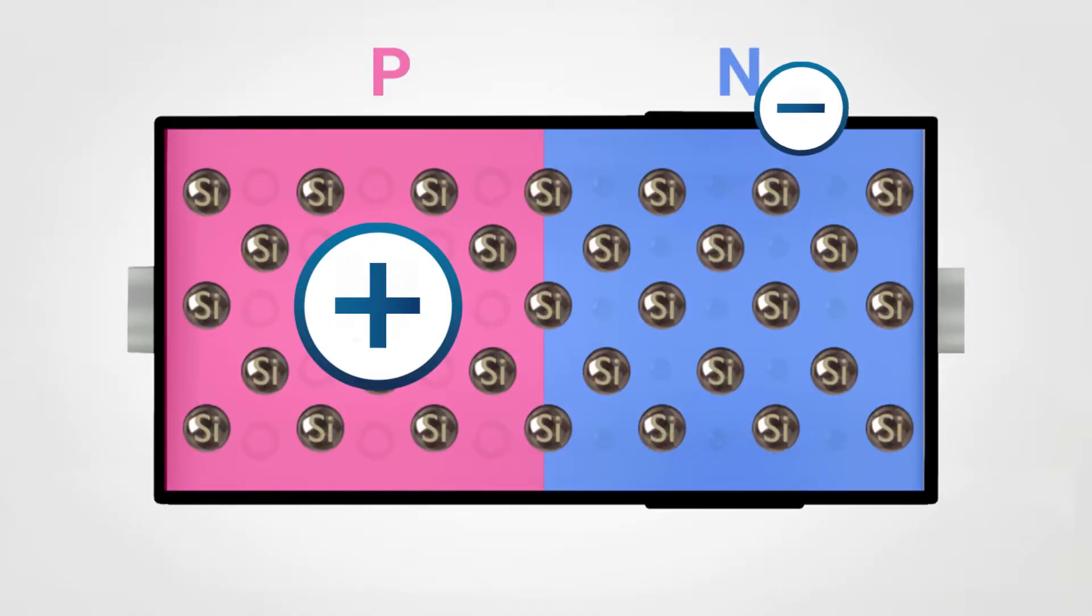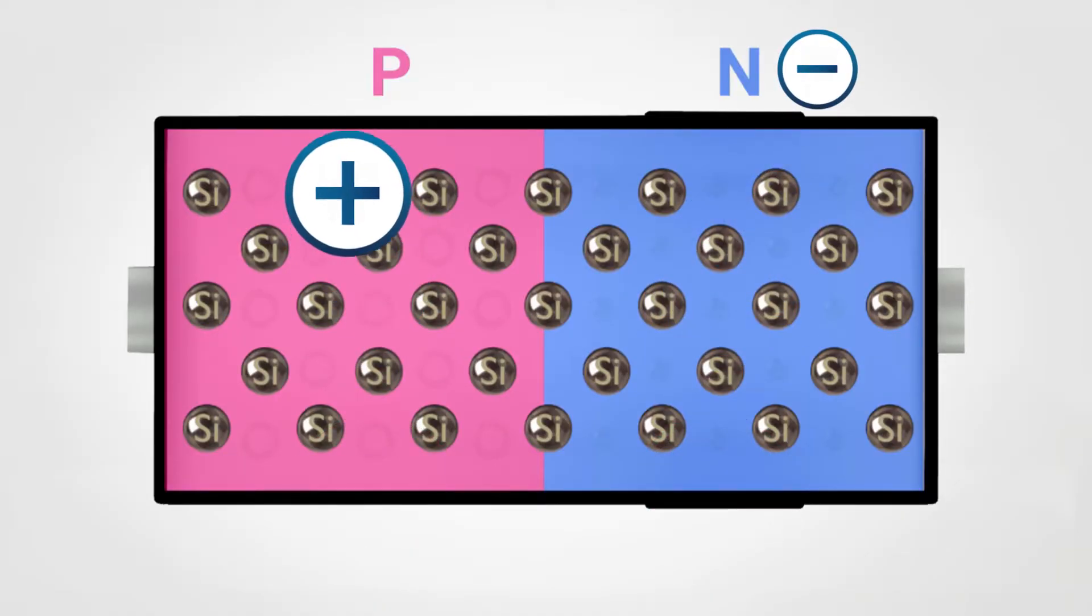We will call N the negatively charged part and P the positively charged part, thus distinguishing the so-called PN junction.